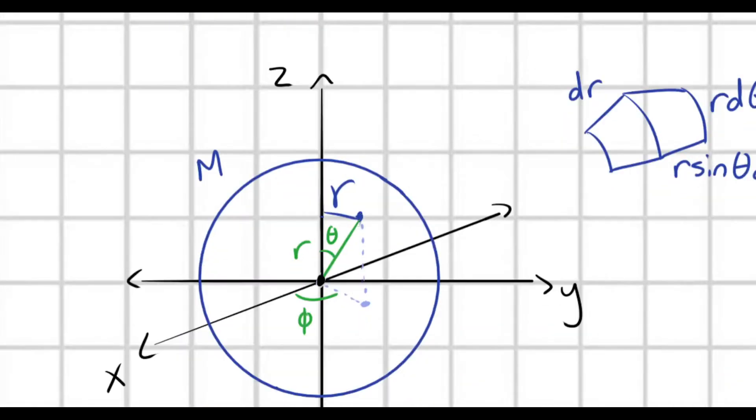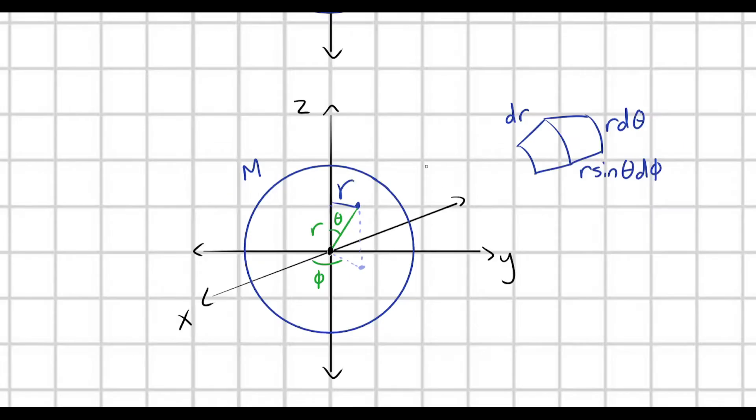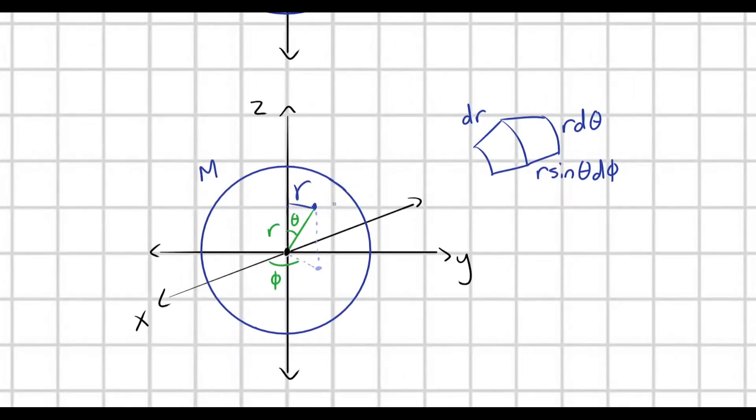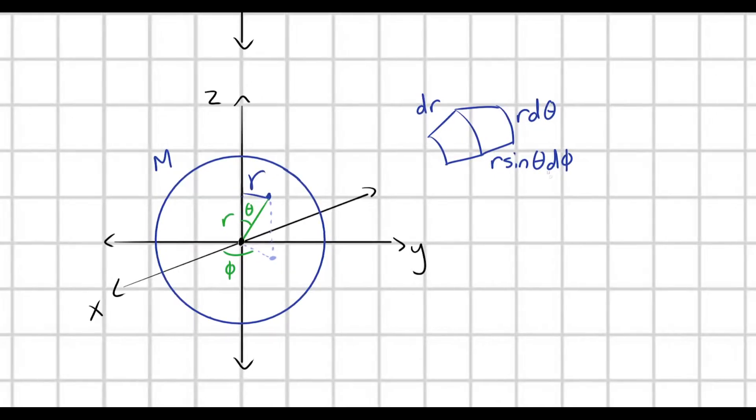This mass element, it could be at any point in the solid sphere. It could be at any radius little r, all the way up until the big radius capital R. And so we can create a volume element in this spherical coordinate space the exact same way I did in my calculating the moment of inertia of a disk video, where I kept R fixed and varied my angle, and then I kept my angle fixed and I varied R. So we're going to do the exact same thing here.